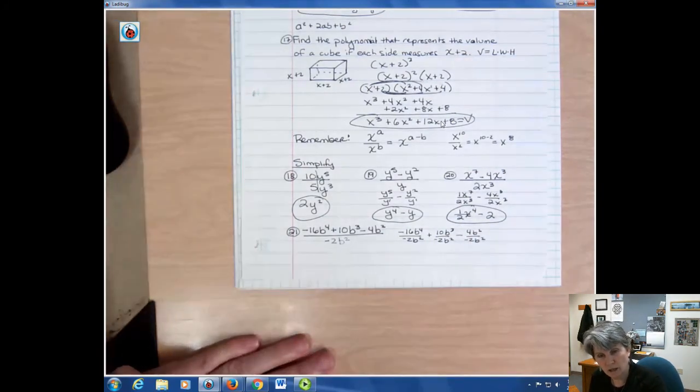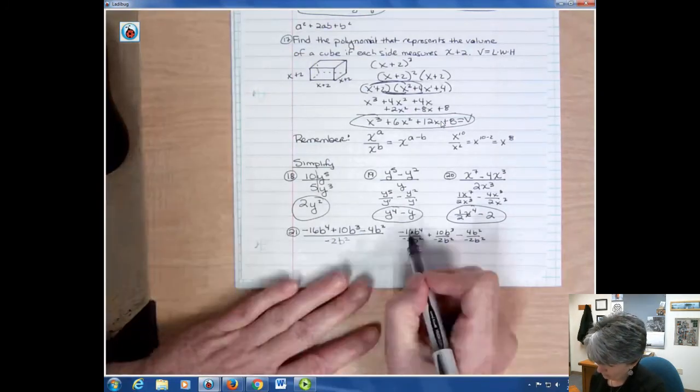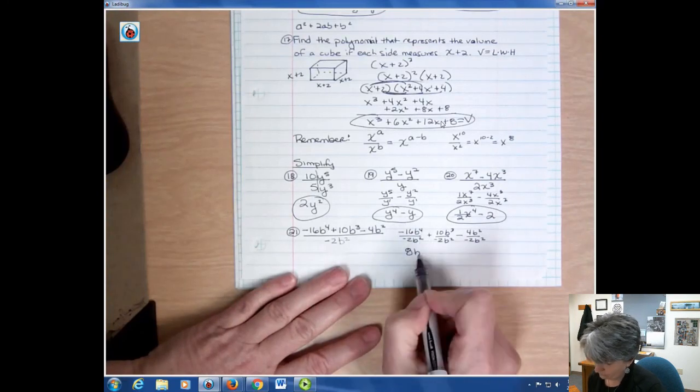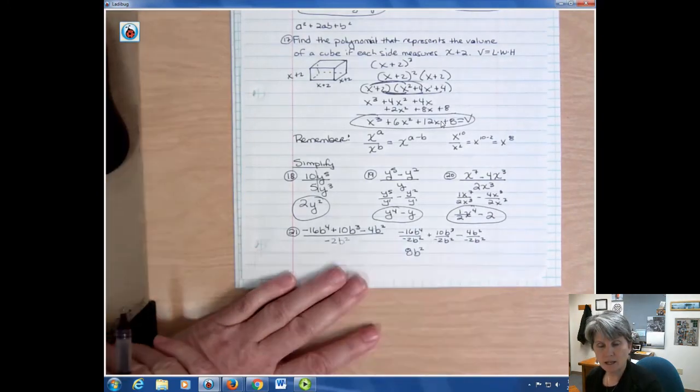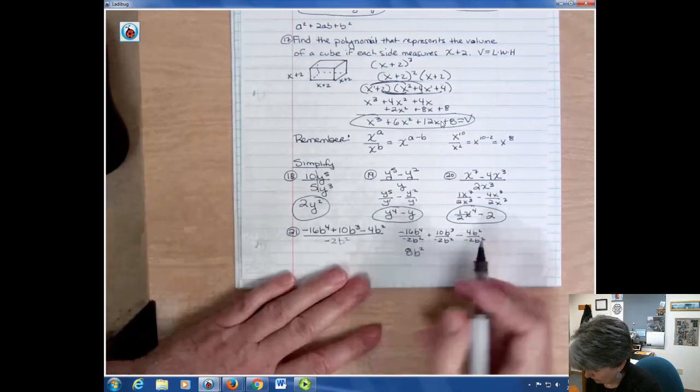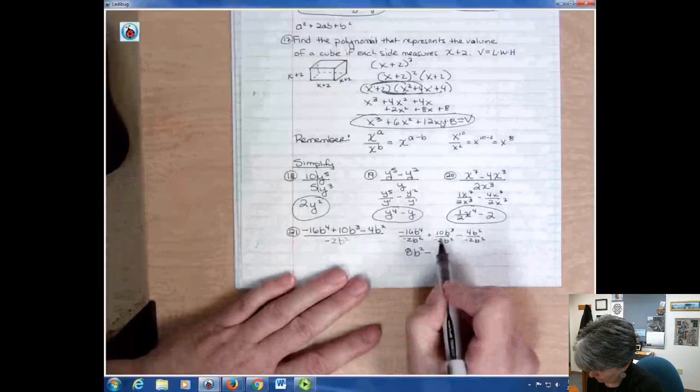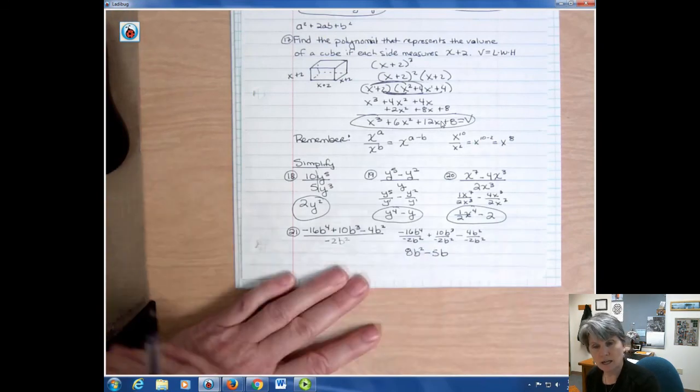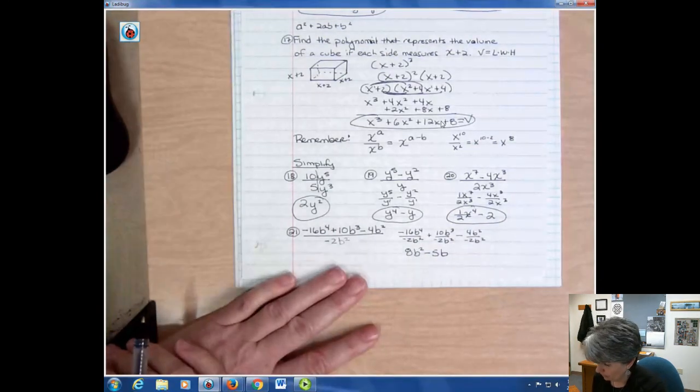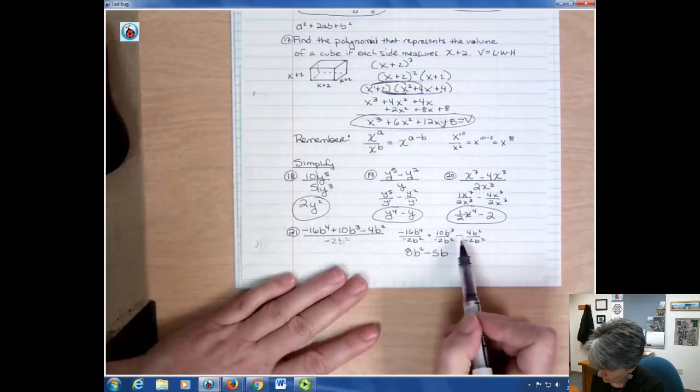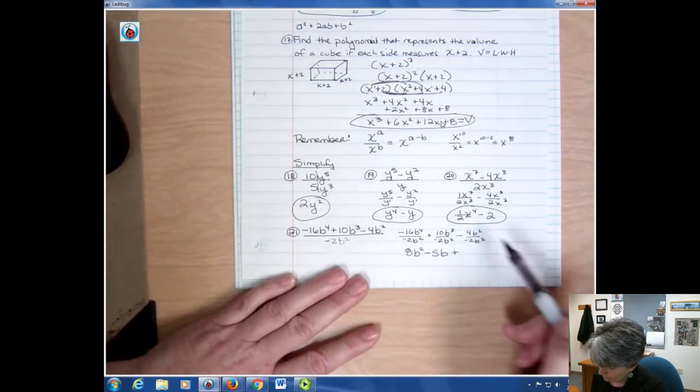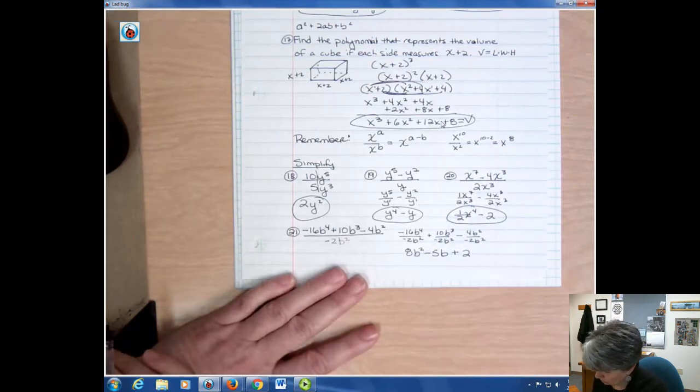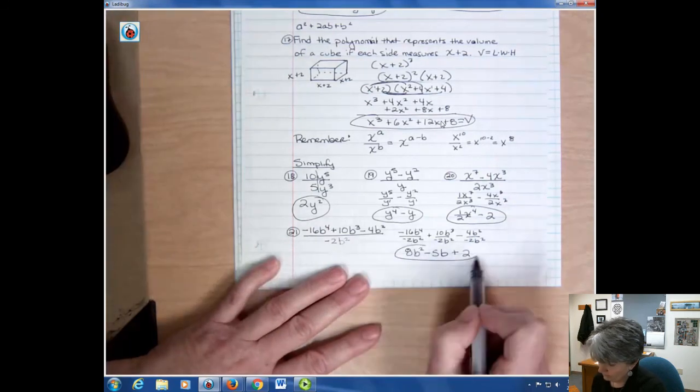Notice in the first one, I've got two negatives. That's going to become a positive. 16 divided by 2 is 8. And I have 4 minus 2 or b squared. In my second one, I have a positive divided by a negative. So that becomes a negative. 10 divided by 2 is 5. And I have 3 minus 2 or b to the first power. Again, I don't need to show that one there for that first power. And here I have two negatives. So that's going to be a plus. 4 divided by 2 is 2. And the b's cancel out completely. 2 minus 2 is 0. And this is going to be my final answer.